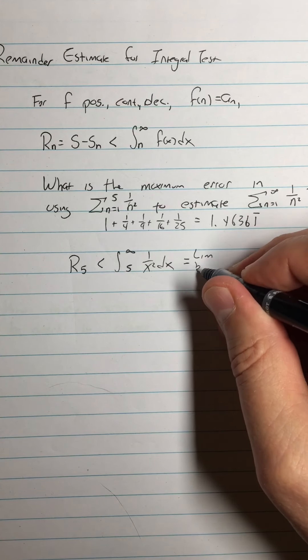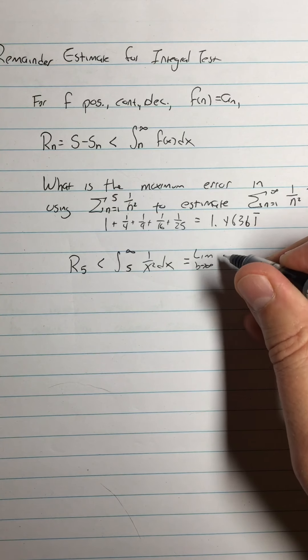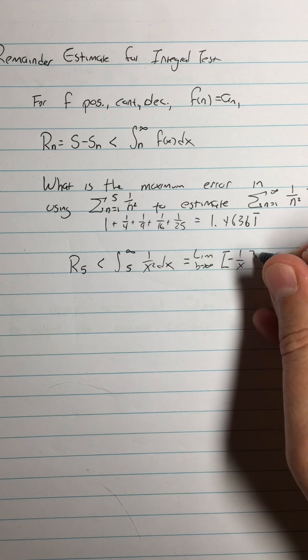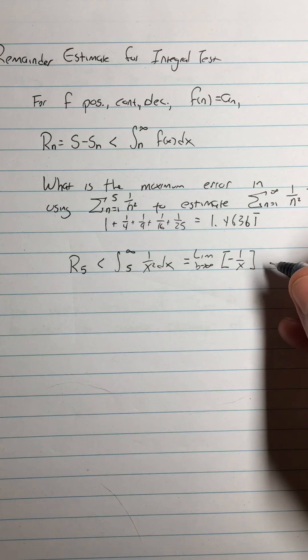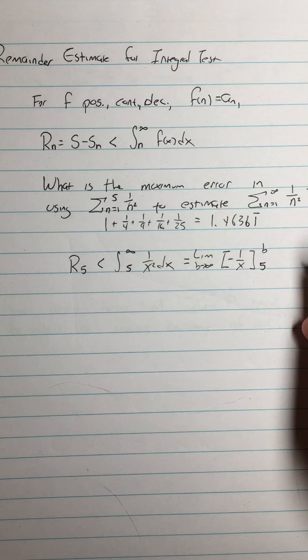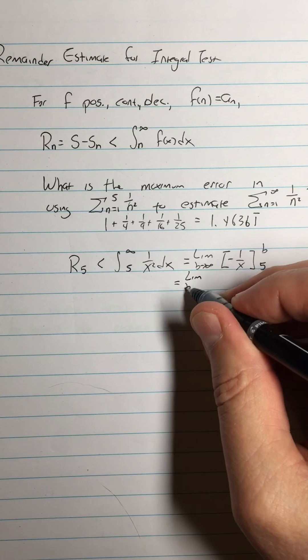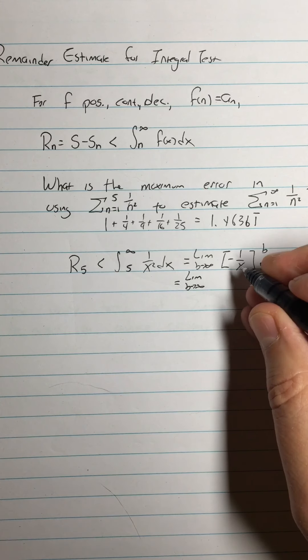That's the limit as b approaches infinity. I'm going to go ahead and just do the antiderivative right away because we've done this a bunch of times. We know that antiderivative is negative 1 over x. And we're going from 5 to b.